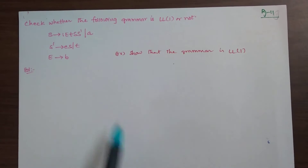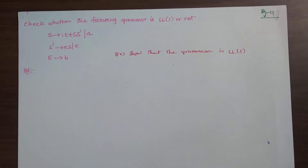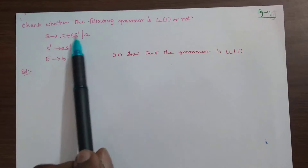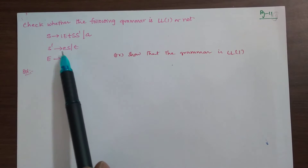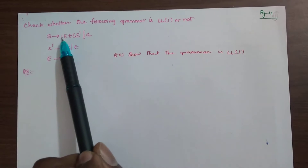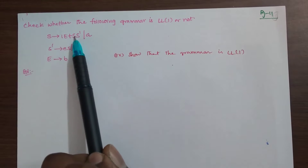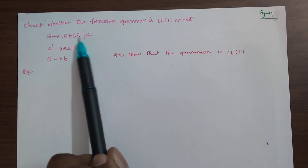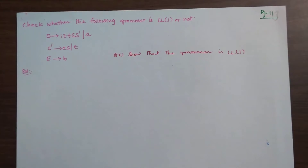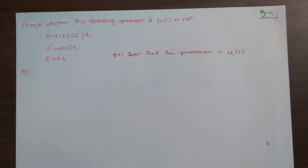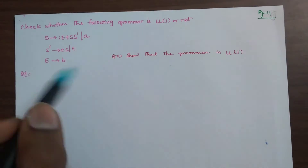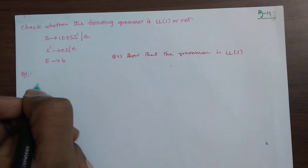Check whether the following grammar is LL(1) or not. There is a grammar in the dangling else problem. After eliminating the ambiguity, that is the grammar: if expression, then statement — it is a matched statement or an open statement. This is the dangling else problem. That grammar is LL(1) — you can check the grammar.